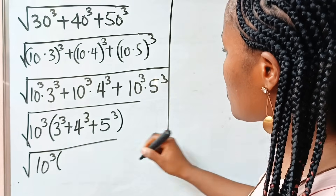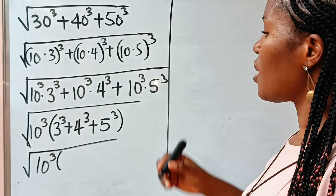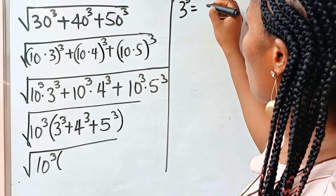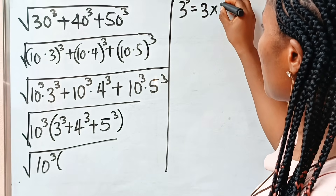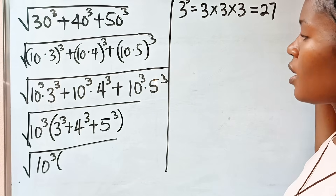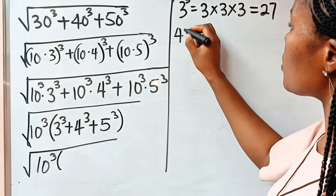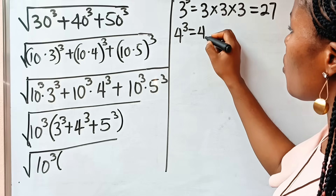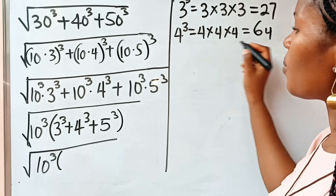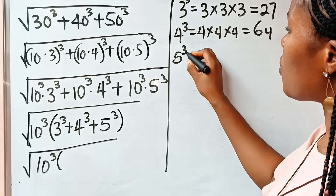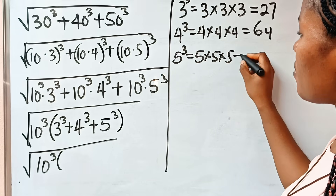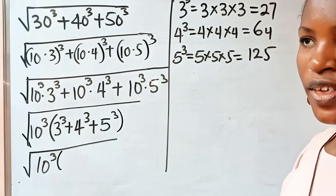Now let us evaluate 3 to the power of 3. Remember that 3 to the power of 3 is 3 multiplied by 3 multiplied by 3, which gives us 27. Similarly, 4 to the power of 3 is 4 multiplied by 4 multiplied by 4, which gives us 64. And 5 to the power of 3 is 5 multiplied by 5 multiplied by 5, which gives us 125.